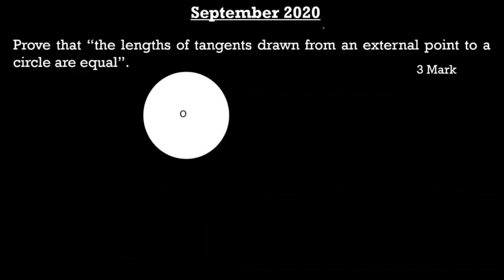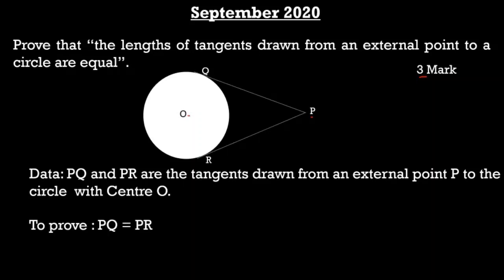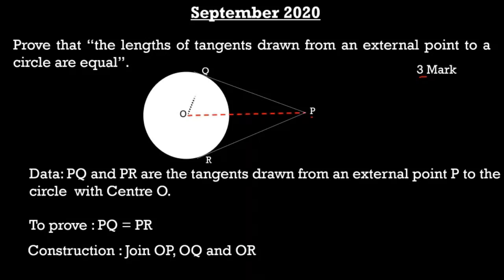The second question from September 2020 is: prove that the lengths of tangents drawn from an external point to a circle are equal. This is Theorem 4.2 and this question is for 3 marks. The data given here is a circle with center O, P is the external point, and PQ and PR are the tangents drawn from external point P to the circle. We are required to prove PQ is equal to PR. To prove this, we join OP, OQ, and OR.